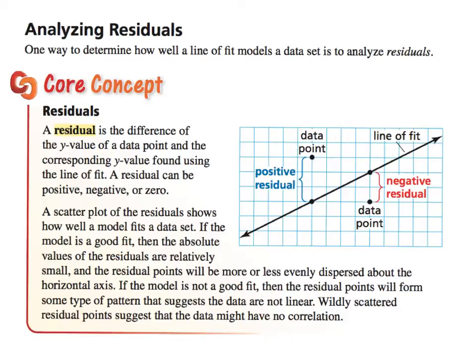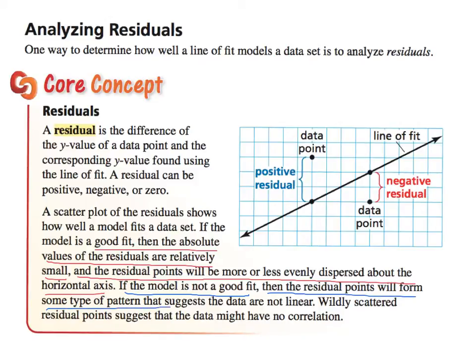A scatter plot of the residuals shows how well a model fits a data set. If the model is a good fit, then the absolute values of the residuals are relatively small and the residual points will be more or less evenly dispersed about the horizontal axis. If the model is not a good fit, the residual points will form some type of pattern that suggests the data is not linear. Wildly scattered residual points suggest that the data might have no correlation.